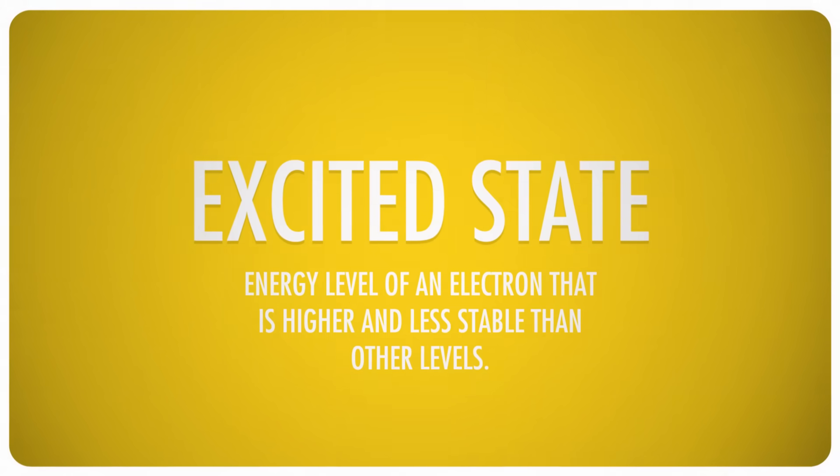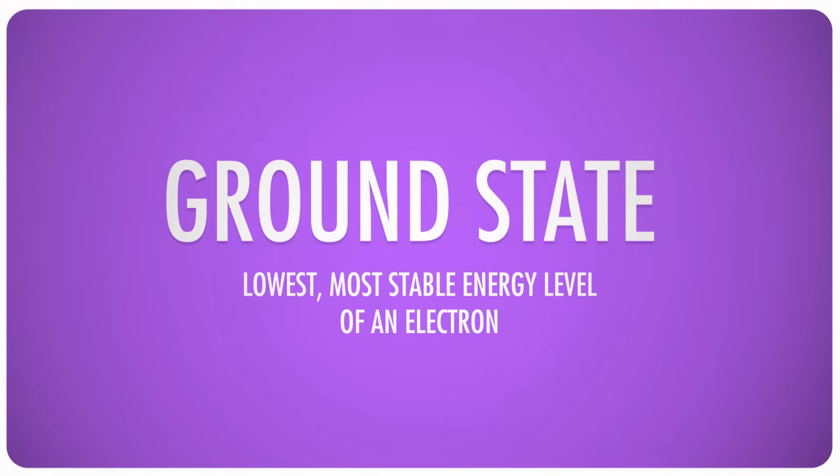This form of radiation is often released when electrons transition from an unstable, excited state to a more stable state that has a lower energy. That's called the ground state.